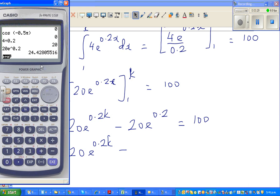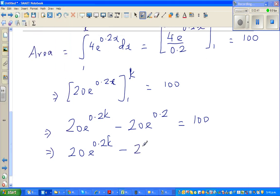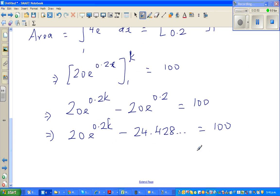Which is 24.42, 24.428, I will not round at this stage, 24.428 dot dot dot equals 100. And now if you add this to both sides, 20e to the power 0.2k is 100 plus 24.428.